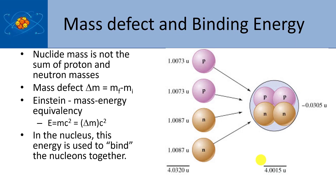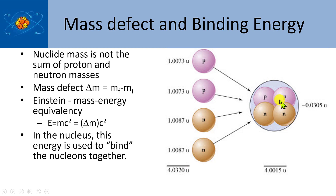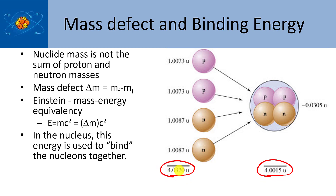One of the things people noticed right away is that if you look at the mass of protons and the mass of neutrons — for a helium nucleus — and add all the masses of the subatomic particles together, you get 4.032 atomic mass units for a helium-4 nucleus. The problem is, when you actually measure the mass of a helium-4 nucleus, it's actually 4.0015. So this mass of the nucleus is less than the mass of the particles that made it. The difference is known as the mass defect.